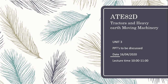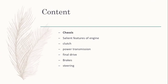Hello friends, this lecture is in continuation with the lecture series on tractors and heavy earth-moving machinery. We were discussing unit number two, which we have completed, and now today we are starting with unit number three. In unit number three we will discuss the basic elements of the tractor: chassis, engine, clutch, power transmission, final drive, brakes, and steering.